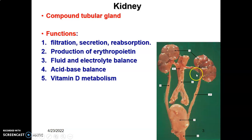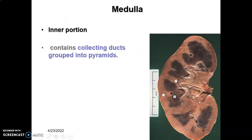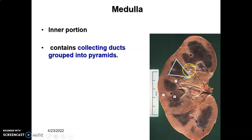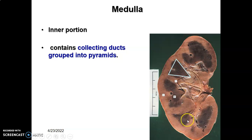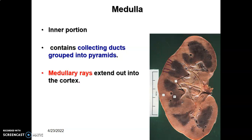This is your kidney — you have two, one on the right and one on the left side — and this is the urinary bladder and the ureter. The structure of the kidney has an outer cortex and an inner medulla. The inner portion of the medulla contains the collecting ducts grouped into pyramids. This is the cortex, this is the medulla, and you can see it has medullary pyramids.